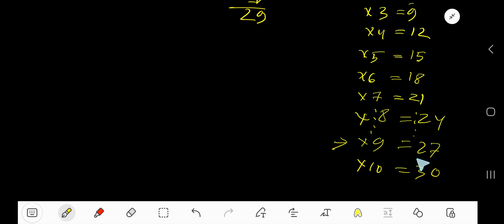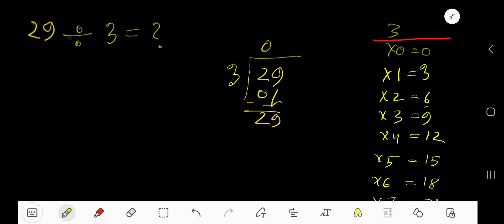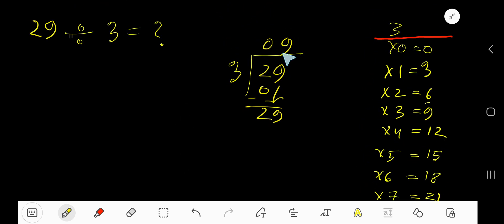So 9 times. That gives us 27. 9 times 3 is 27. Subtract, we are getting 2. So our answer is 09, which means 9 remainder 2.